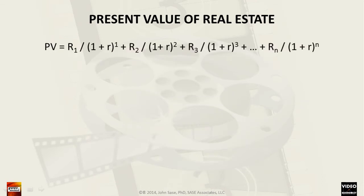Combining these terms into an equation, we find that we must discount the rental income for all future years for which the property is held. As we measure further into the future, the discount factor becomes larger for each successive year. This growth in the discount factor occurs because we have a value greater than 1 and take this value to an ever increasing power.